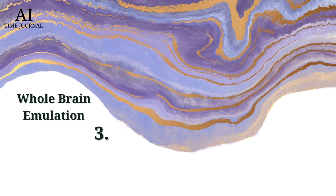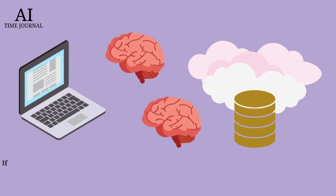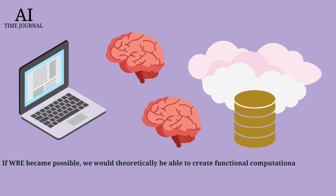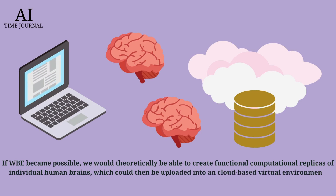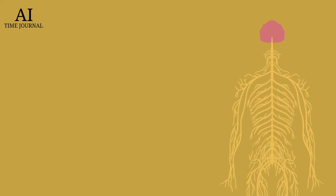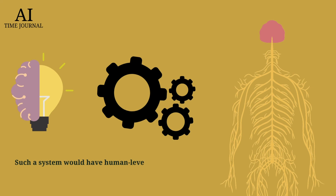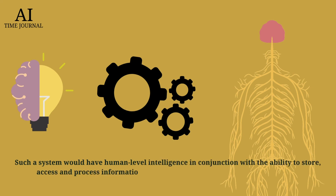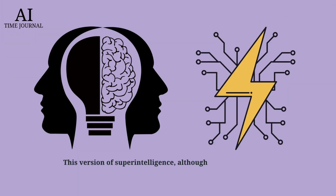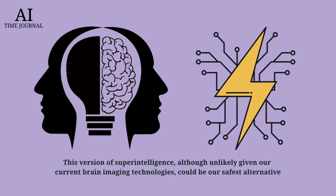Path 3: Whole Brain Emulation. If WBE became possible, we would theoretically be able to create functional computational replicas of individual human brains, which could then be uploaded into an interactive cloud-based virtual environment. Such a system would have human-level intelligence in conjunction with the ability to store, access, and process information much faster than the biological human brain. This version of superintelligence, although unlikely given our current brain imaging technologies, could be the safest alternative.